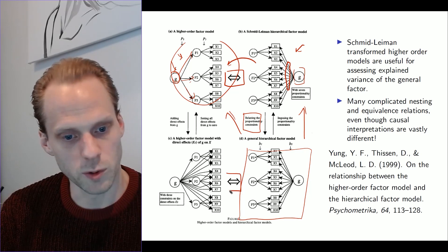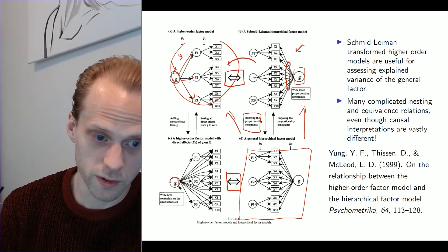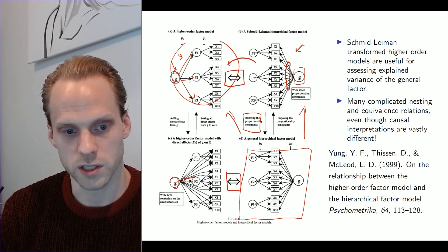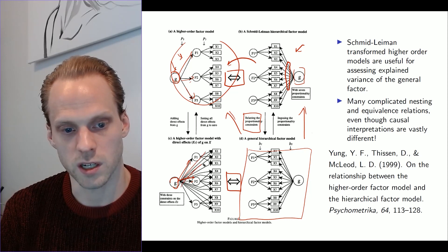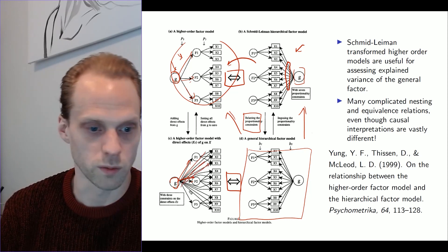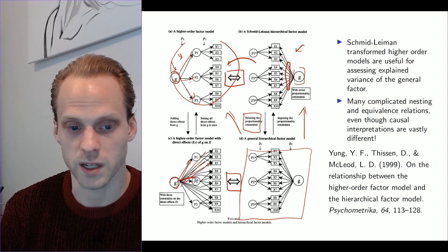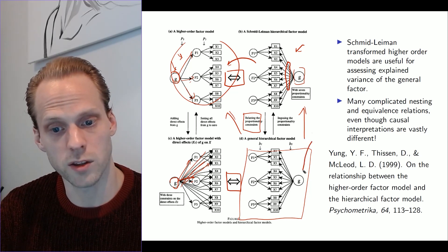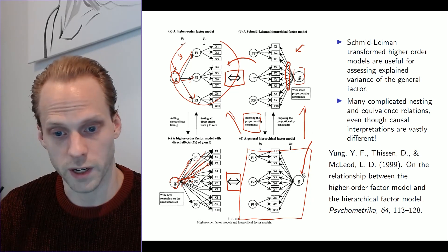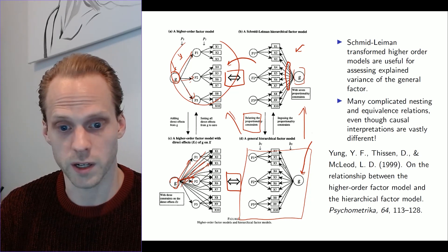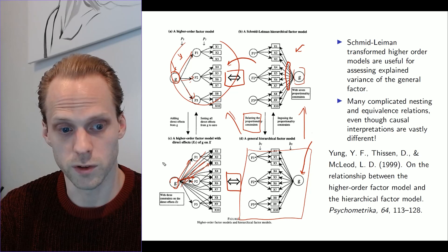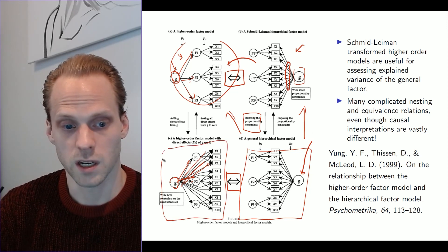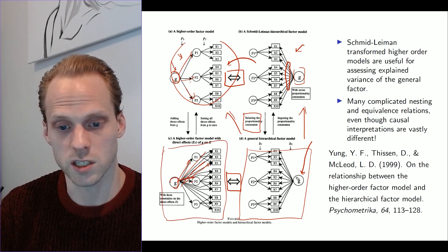And it turns out that this model is again equivalent to a model where we have a general factor, but it causes the items and also each indicator directly with some constraints on these effects. And that's actually a nice thing, I think, because that means that you can interpret the general factor of the bifactor model as a general factor, because it is equivalent to this one. And then the nice thing that you can do with this, you can see, okay, this is a general factor.